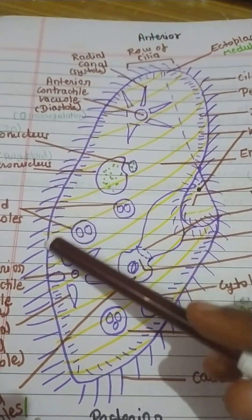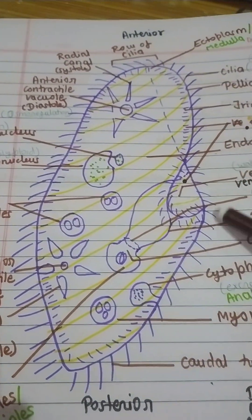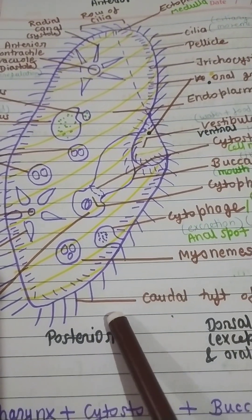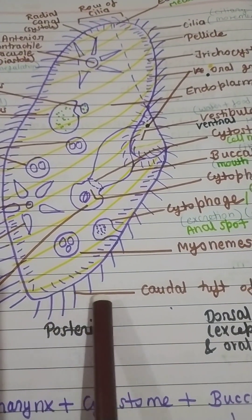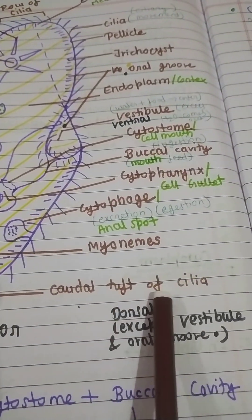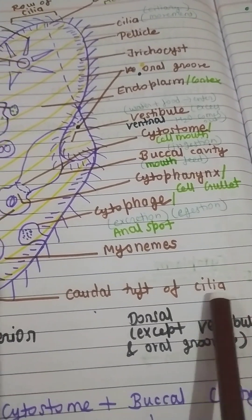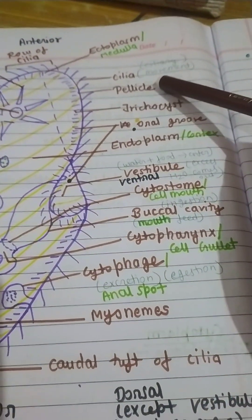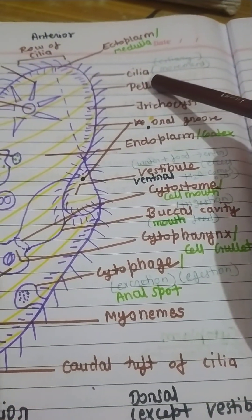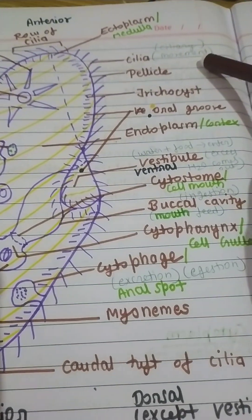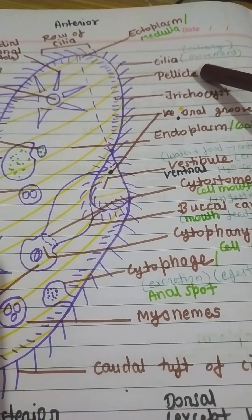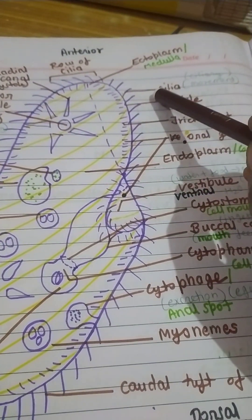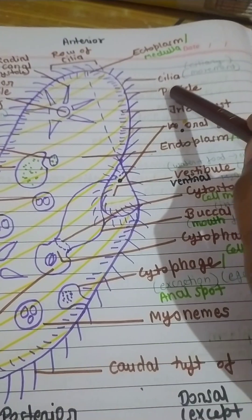Where cilia is large in size, that is known as the caudal tuft of cilia. The cilia is the locomotory organ by which paramecium performs ciliary movements, and the force which is used is friction force.